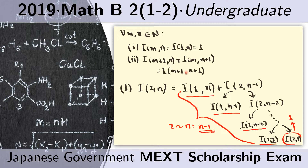For this problem, we notice that we only have a numerical value if one of the arguments is 1. So if we have 1 as the second argument, the value is 1; if we have 1 as the first argument, the value is also 1, regardless of the other argument. The plan is to reduce the given expression into a form where one of the arguments is 1.